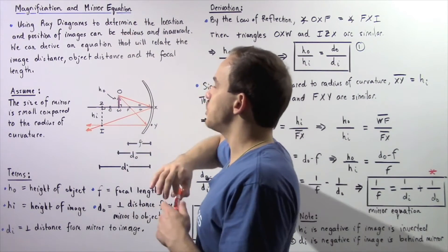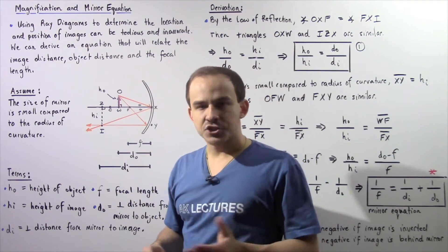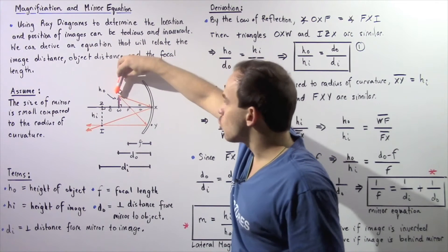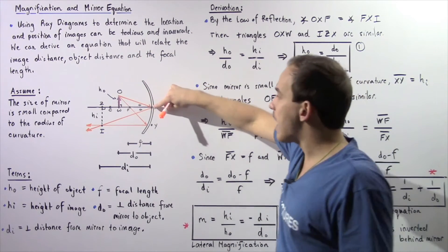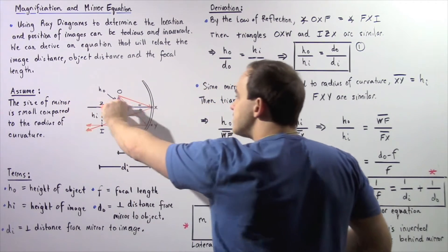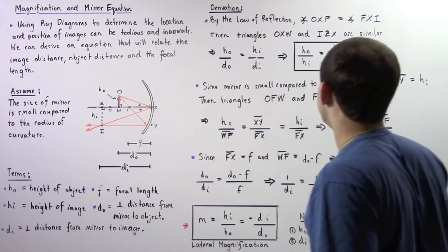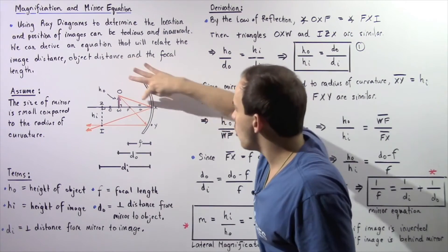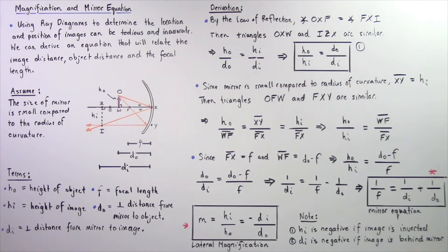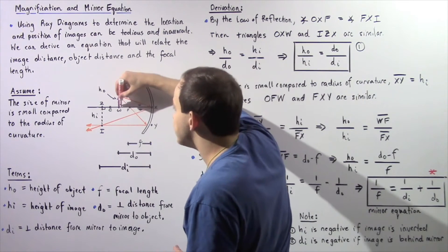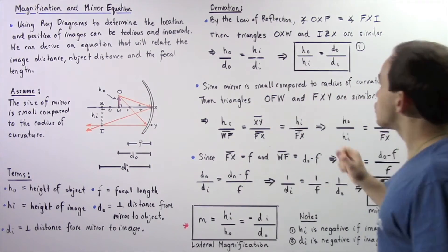Let's begin our derivation by applying the law of reflection to ray number one. Ray number one bounces off from point O on our object, goes to the center of our concave mirror, and bounces off. The normal line at that point means that by the law of reflection, angle OXF is equal to angle FXI. Because these two angles are equal and each forms a 90-degree angle, we have two right triangles that are similar.